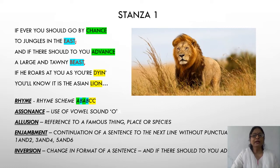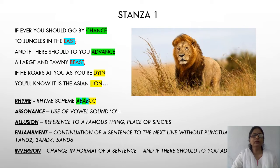To make it easier for you, I have highlighted some of the words: chance, advance, east, beast, dine, lion. I've given the color code for you to see the rhyme scheme. The poetic devices used in stanza 1 are rhyme, assonance, allusion, enjambment, and inversion.